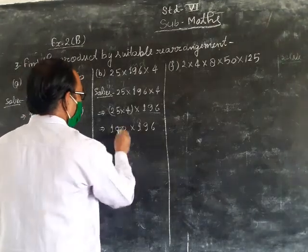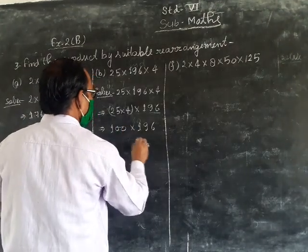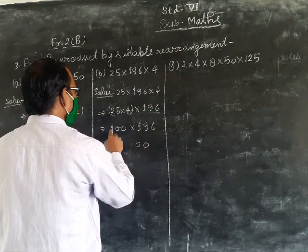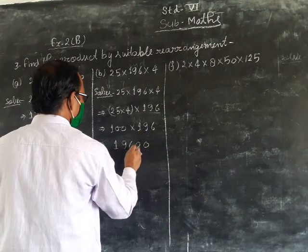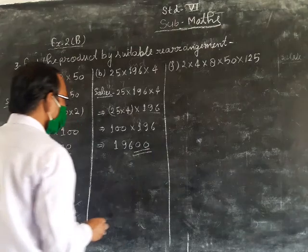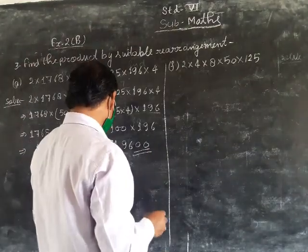Now multiply by 196. 100 multiply by 196 equals 19600. This is the answer for part B.